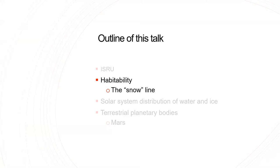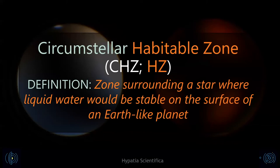Having talked about ISRU, let's now get into the science — habitability and the snow line. The circumstellar habitable zone, CHZ or HZ, is essentially the livable zone. What you need to live, as someone correctly noted, is water. So the circumstellar habitable zone means the area around a star — what we call a primary in astronomy — where you can find liquid water.